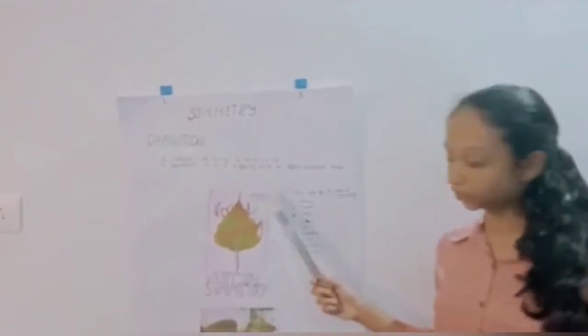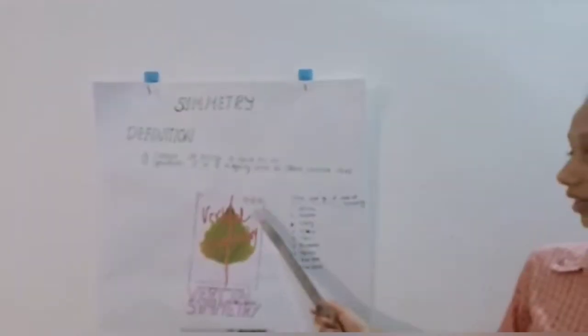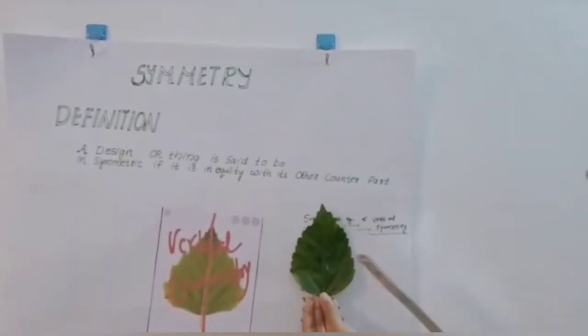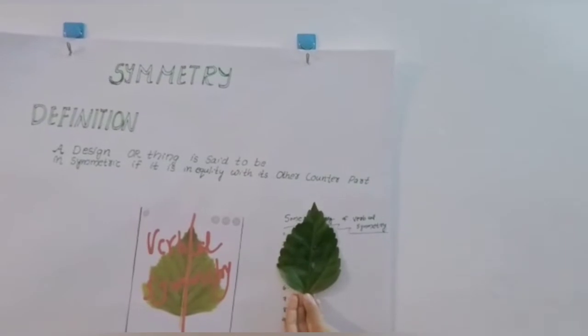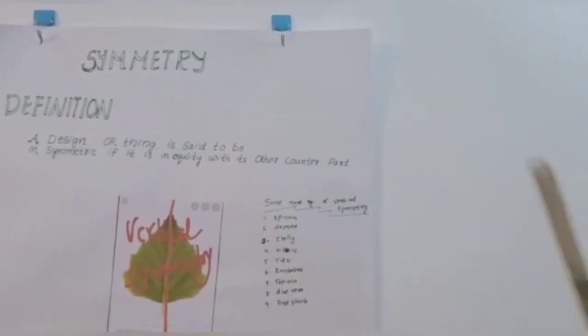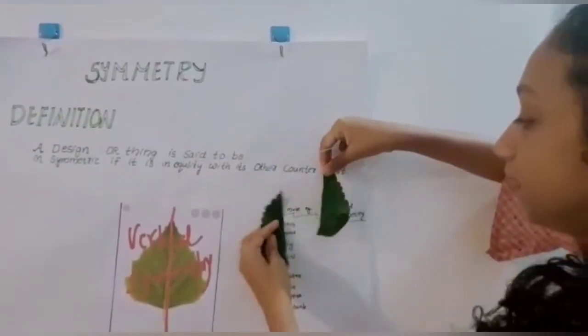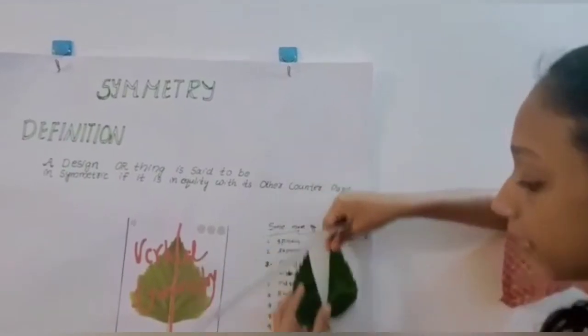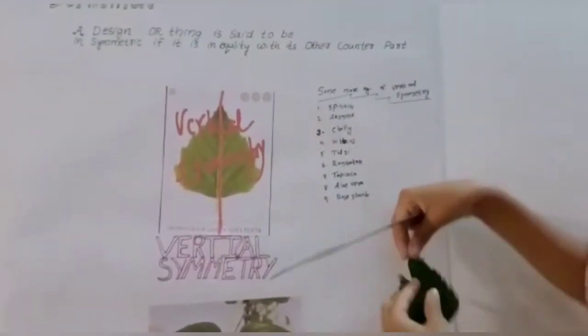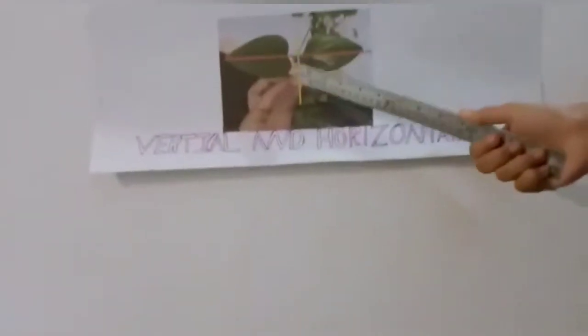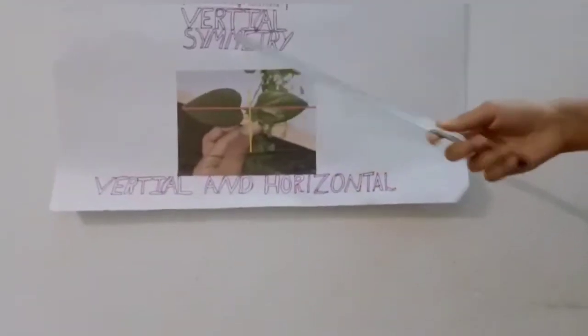These are some examples for vertical symmetry. If we take a leaf of hibiscus and if we divide it into two pieces, we can see it will be in equilibrium. But we can't divide it in a horizontal manner. We will never get it in equilibrium. But look in this picture. This we can divide it into vertical symmetry and horizontal symmetry.